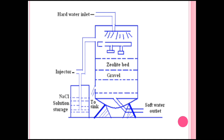This is the diagram of the zeolite method. When hard water is passed through the zeolite bed, there is an exchange of calcium and magnesium ions present in the water sample with sodium zeolite. An equivalent amount of sodium ions is released into the water while all cations are captured. When the capacity of the zeolite bed is exhausted, 10% brine (NaCl solution) is added to regenerate it. Soft water is collected from the outlet. This is the overall diagram of the zeolite bed.